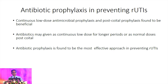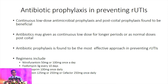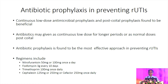Antibiotic prophylaxis is found to be the most effective approach in preventing recurrent urinary tract infection. Regimens we can select include nitrofurantoin 50 mg or 100 mg once daily; fosfomycin 3 grams every 10 days (not registered under NMRA in Sri Lanka); trimethoprim 100 mg once daily (though costly as a standalone in our setting); or first-generation cephalosporins like cefalexin 125–250 mg daily or cefaclor 250 mg once daily.